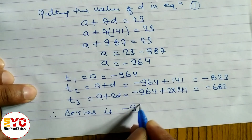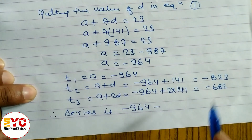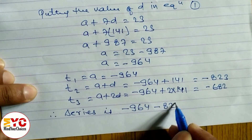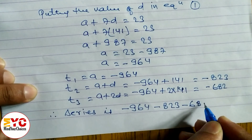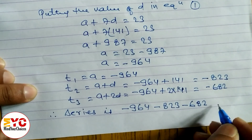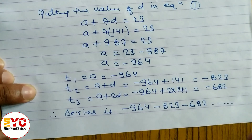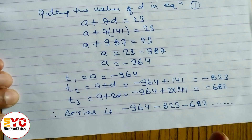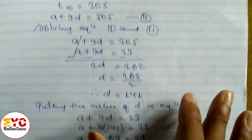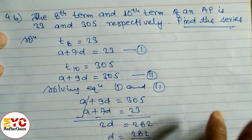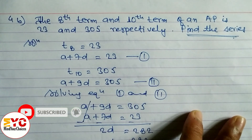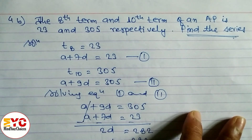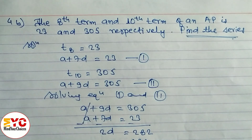Therefore the series is: minus 964, minus 823, minus 682, dash dash — you can write the fourth and fifth terms as well. Hope you understand. If you enjoyed this video please hit the like button, subscribe to the channel, and hit the bell icon for notifications. Thanks for watching, keep supporting and sharing with your friends.